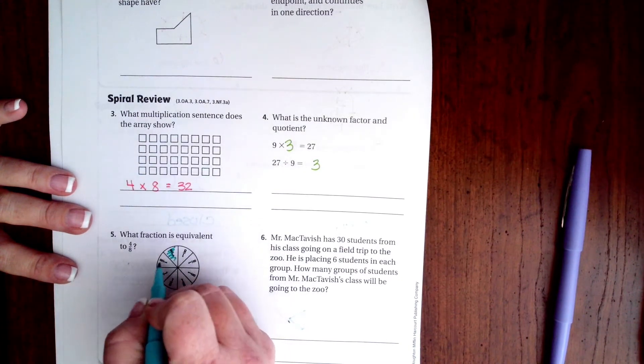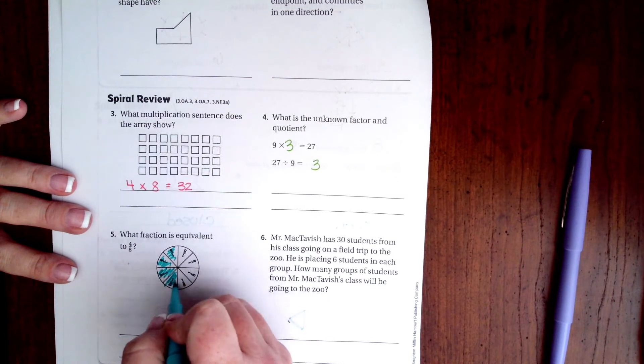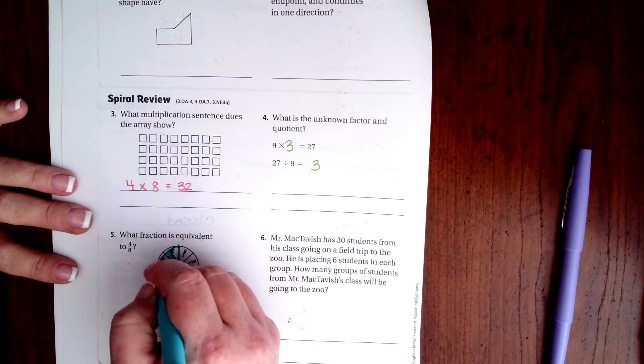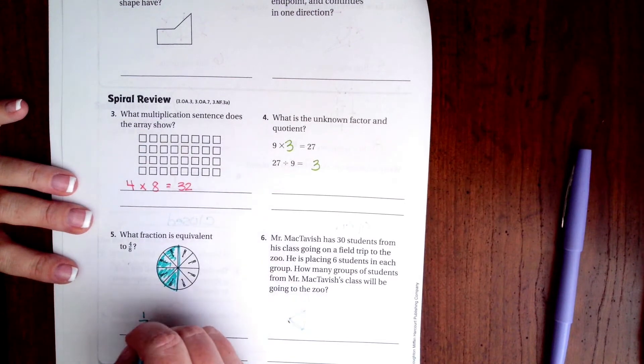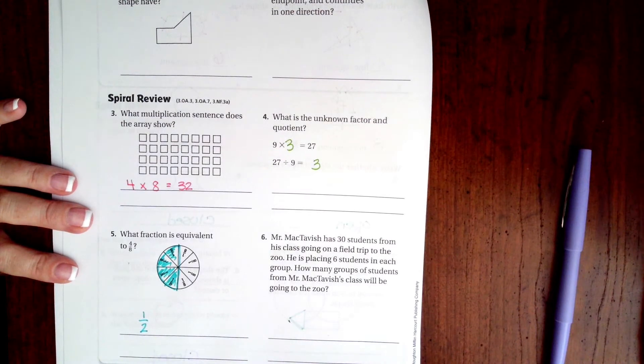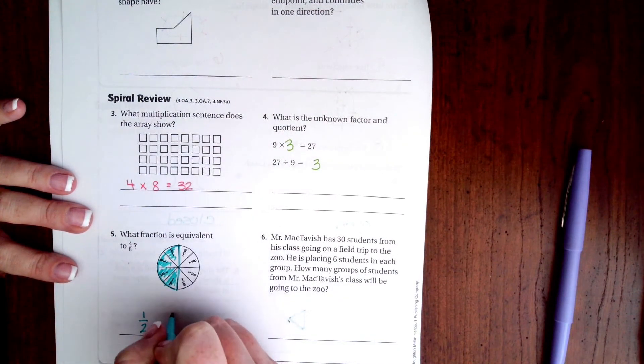Well, that's half of this circle. So one-half is equivalent. We could also say two-fourths.